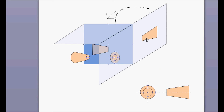Whenever in any engineering drawing you see two circles and this shape on the right-hand side, it is drawn in the third angle. Hopefully this helps you understand the first and third angle of isometric drawing. Thanks for watching, bye.